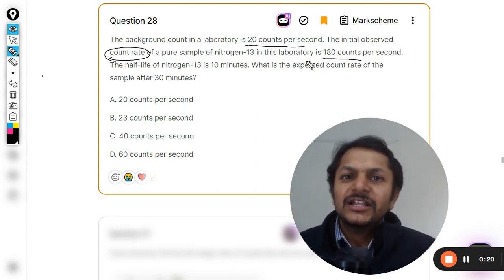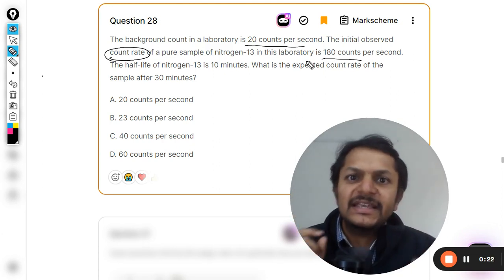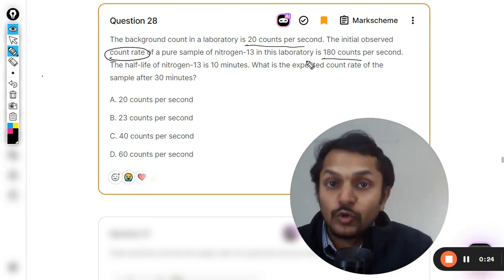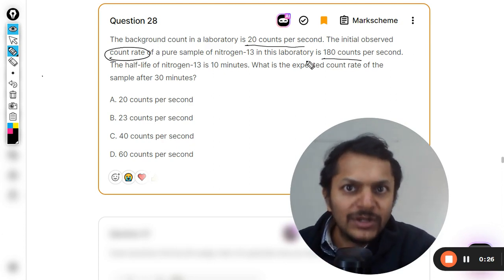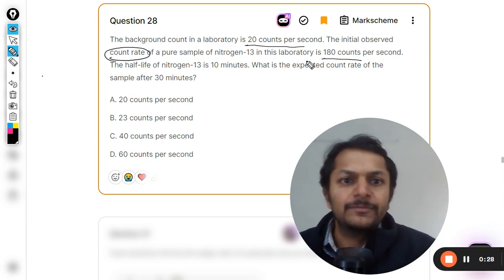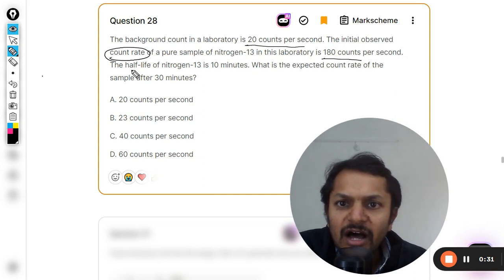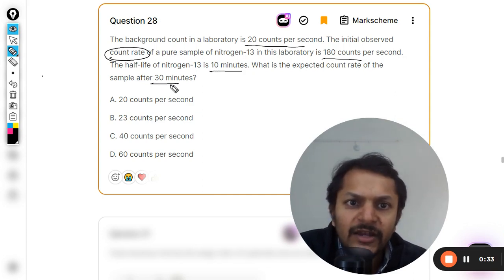This measurement is including the background count also, so this is not the actual disintegration rate of the sample. But anyways, 180 counts per second half-life of the nitrogen is 10.